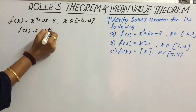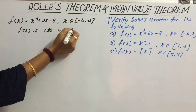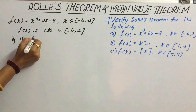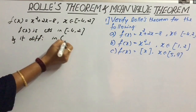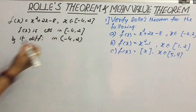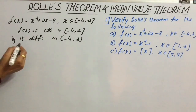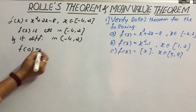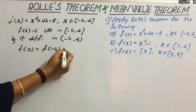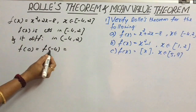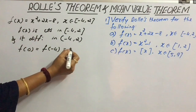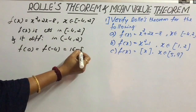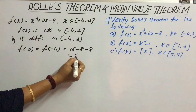Therefore, f(x) is continuous in the closed interval [−4, 2] and differentiable in the open interval (−4, 2). Now consider f(a), that is f(−4). If we replace −4 in the given function, we get (−4)² = 16, then 16 + (−4)(2) − 8 − 8, so we get 0.